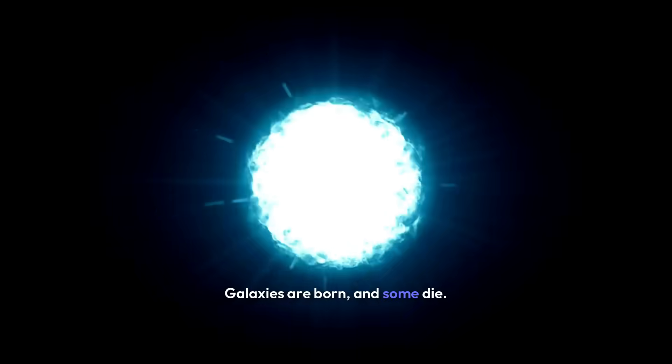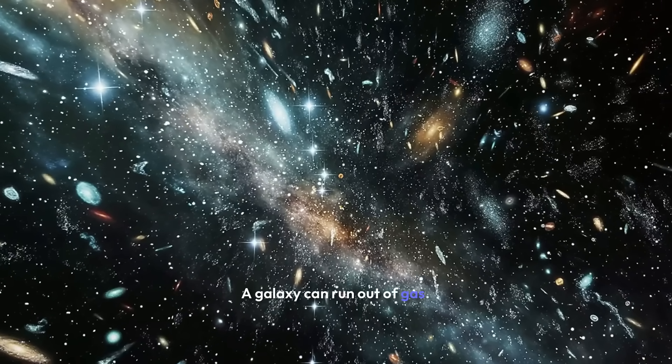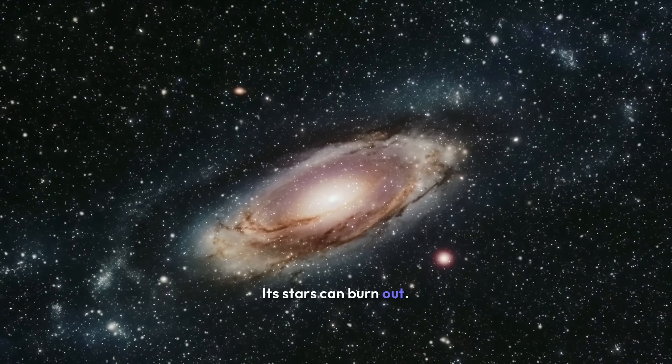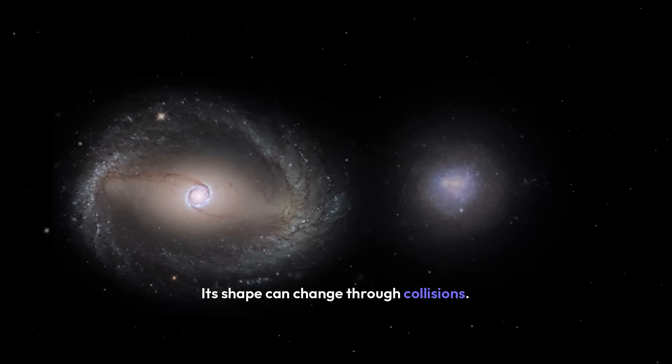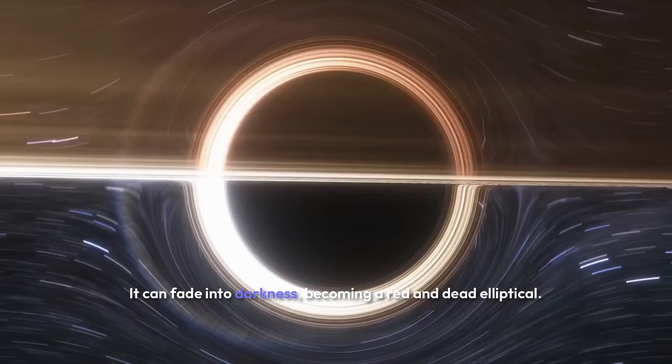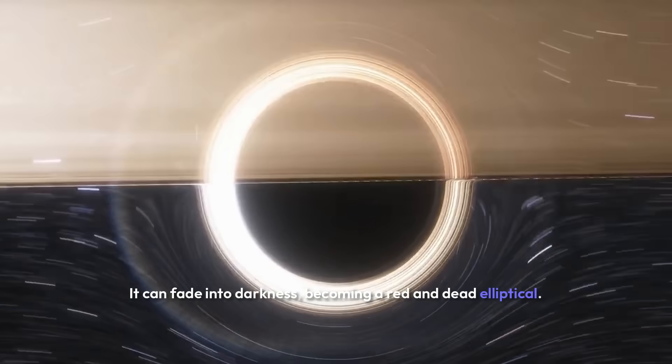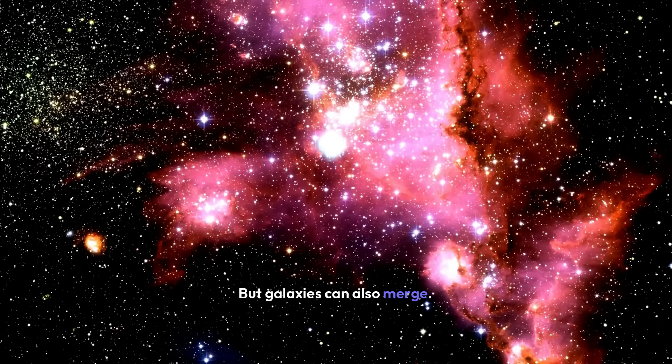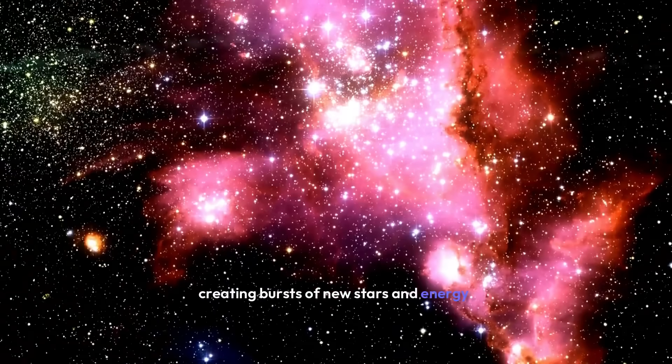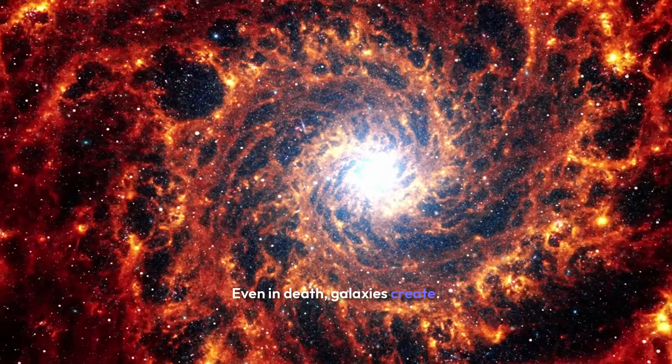Galaxies are born, and some die. A galaxy can run out of gas. Its stars can burn out. Its shape can change through collisions. It can fade into darkness, becoming a red and dead elliptical. But galaxies can also merge, creating bursts of new stars and energy. Even in death, galaxies create.